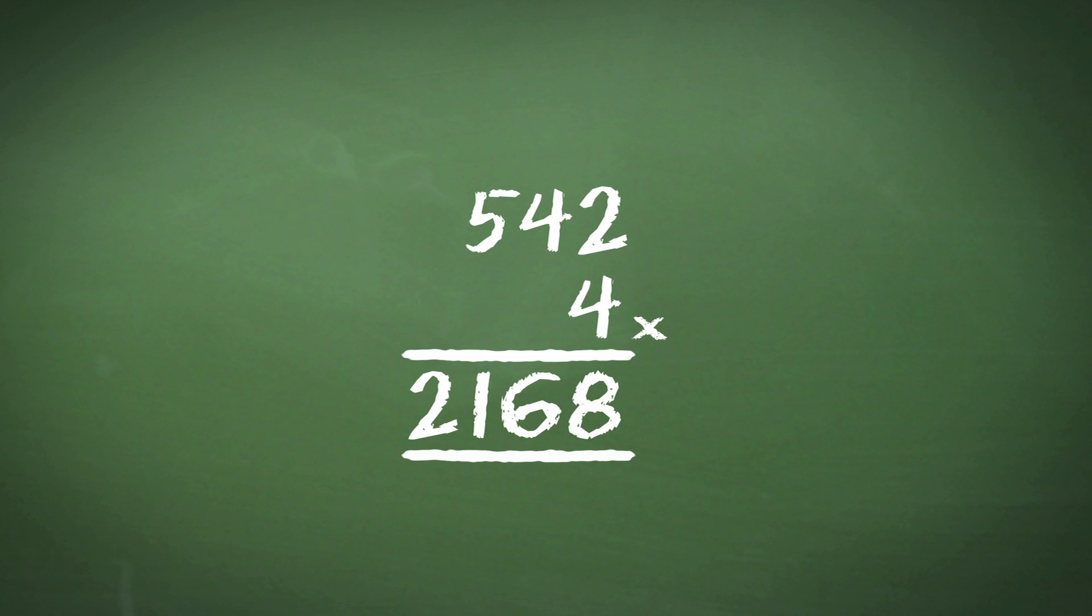As the 5 is in the last or leftmost column, we therefore don't carry the 2 across, but simply put it in as part of the final answer. So the answer to the calculation 542 times 4 is 2168.